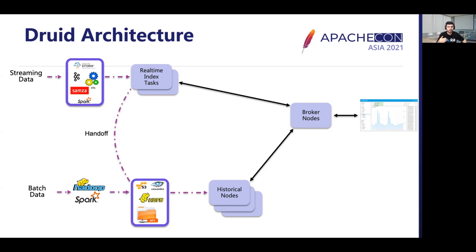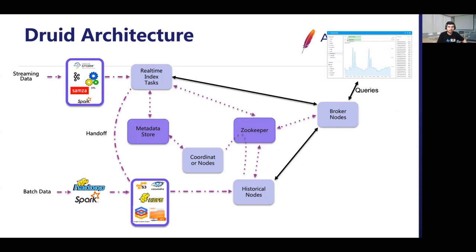In many cases data is delivered on a daily or hourly basis rather than as a stream. If you want to ingest batch data into Druid, you can do that via batch ingestion. A batch job can be run on a Hadoop cluster, using Spark, or using Druid's native batch ingestion tasks, which convert your data into time-partitioned segments and persist those partitions directly into deep storage. From deep storage, those partitions are then loaded onto the historical nodes.